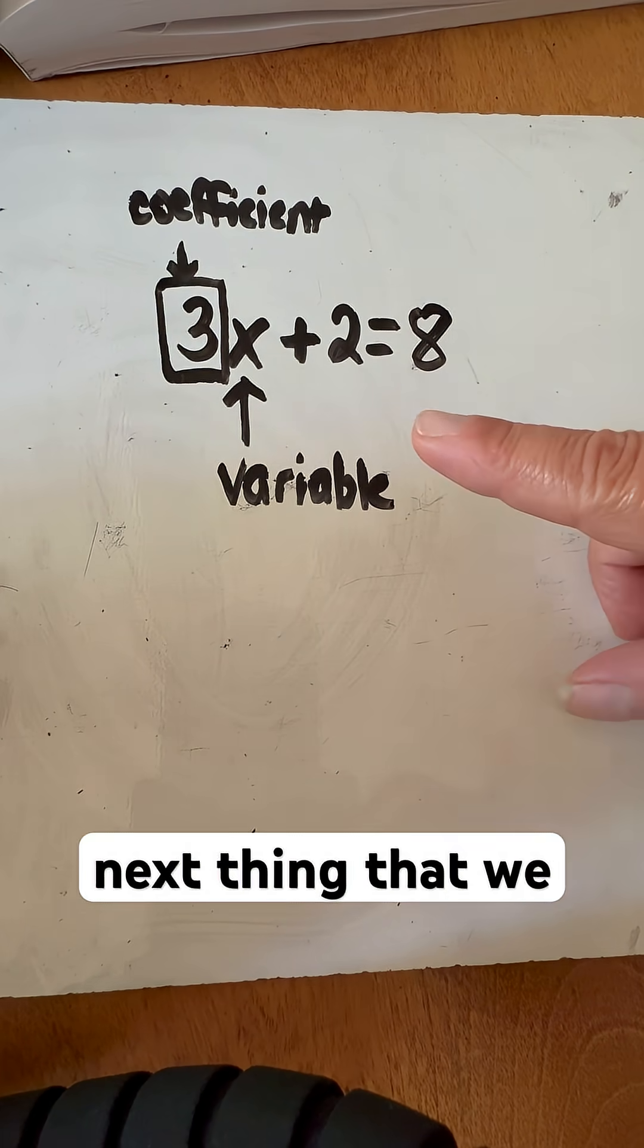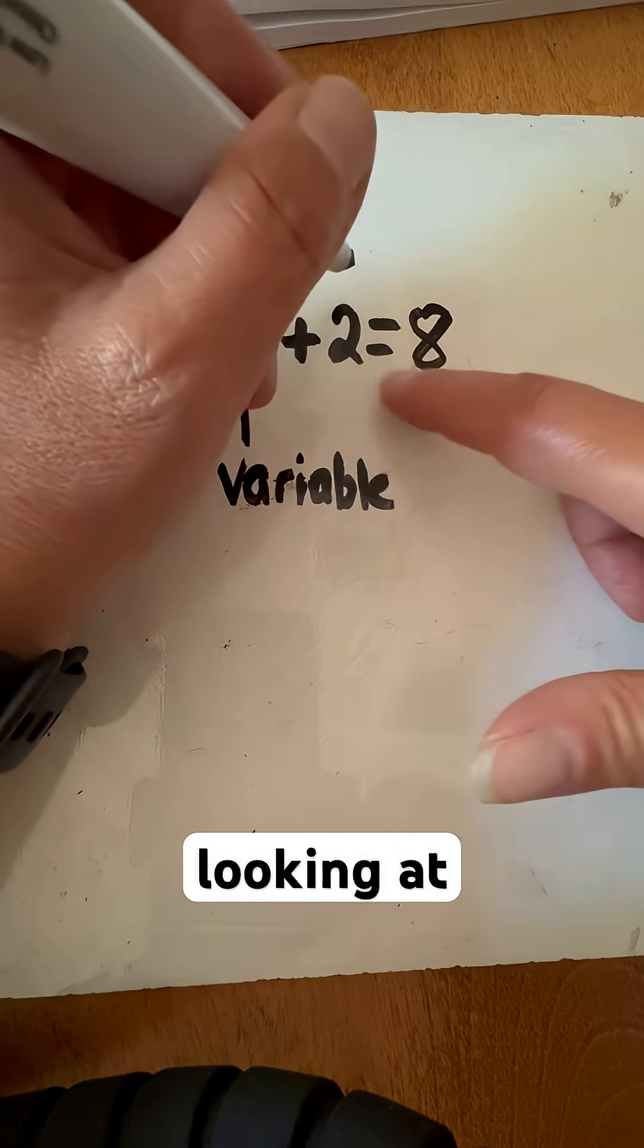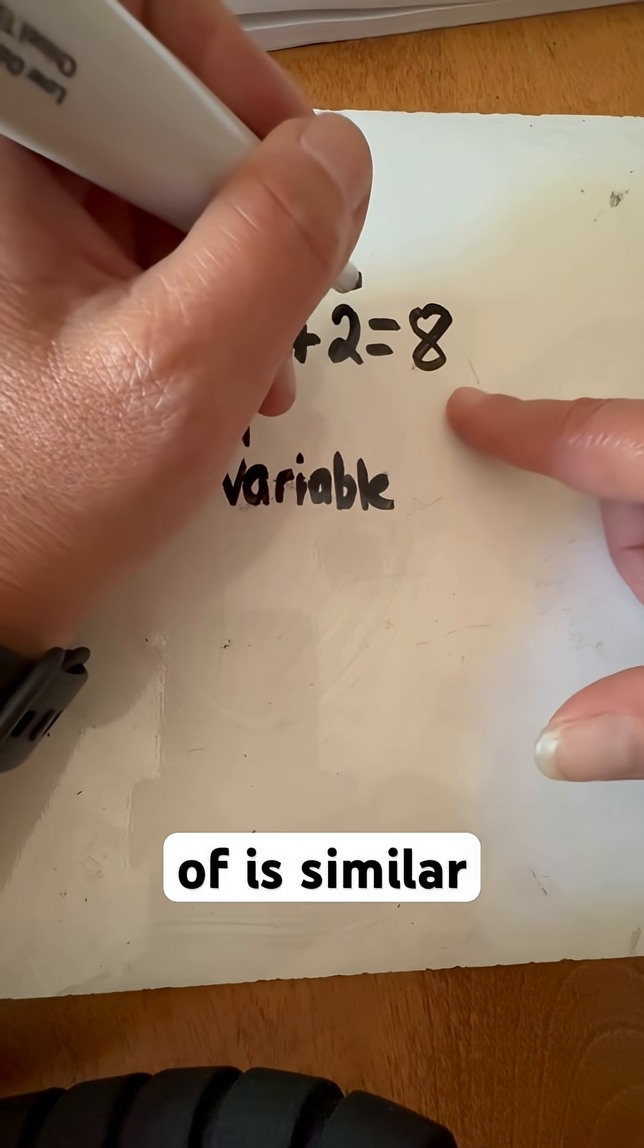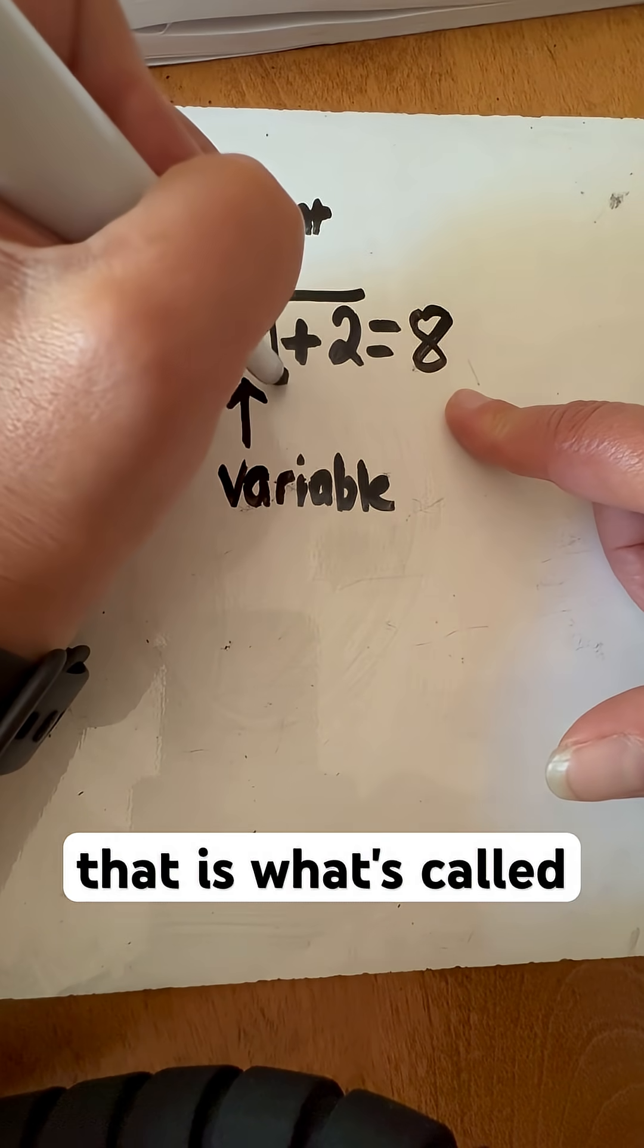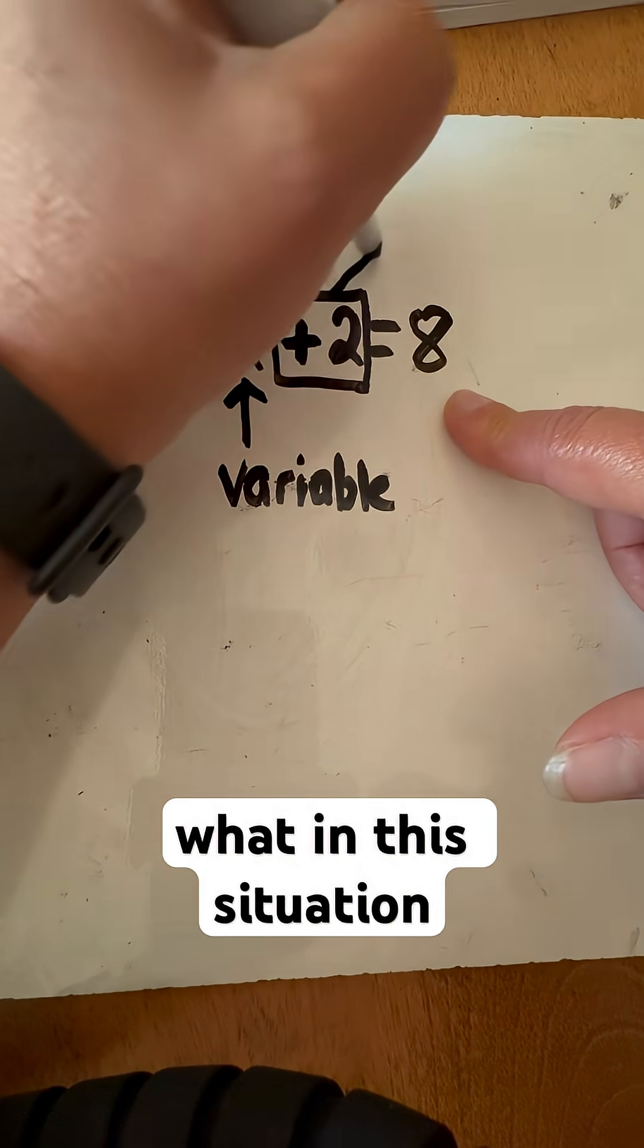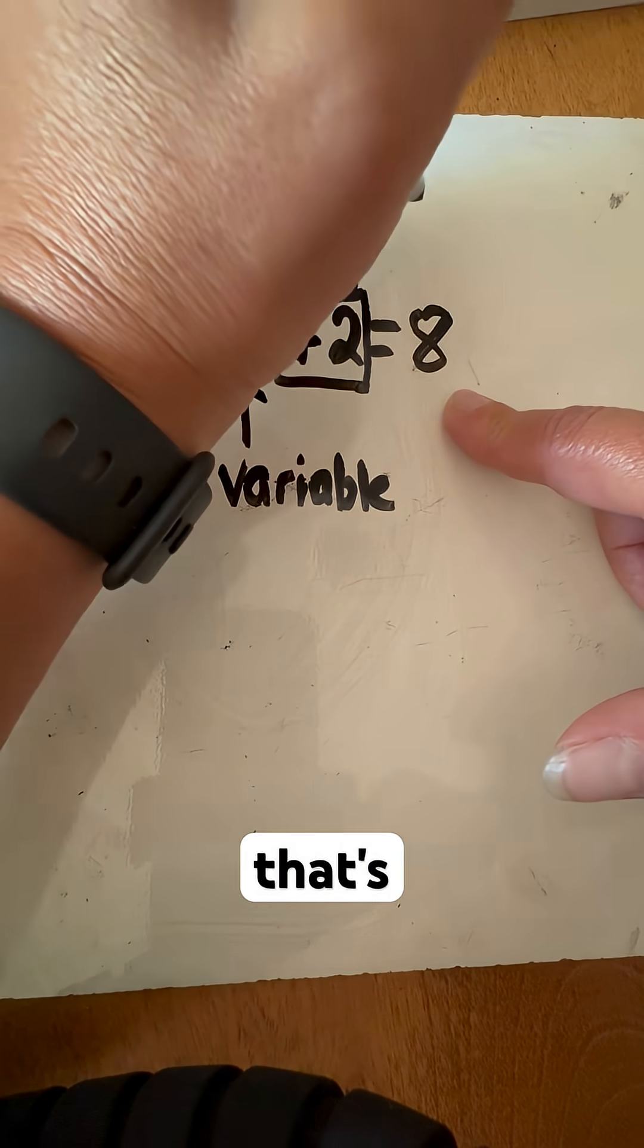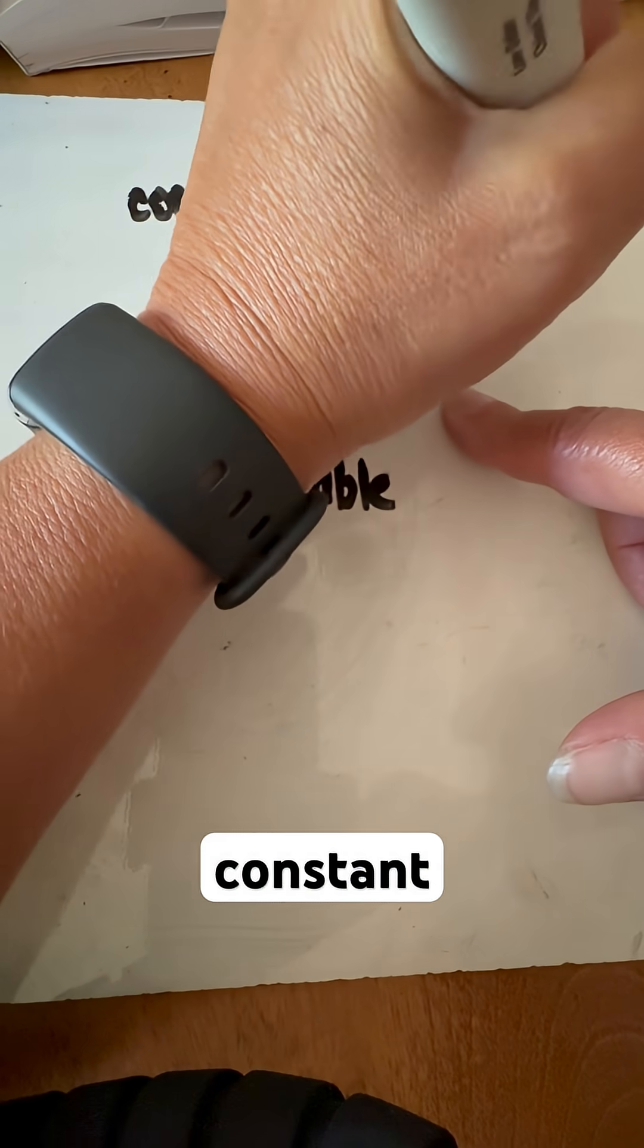Now, the next thing that I have here is that this two, this is something that we're looking at that kind of is similar to that eight. It doesn't have any variable next to it, but that is what's called a constant. So that means that no matter what in this situation is happening, that's always going to be there. This is what's called a constant. This is your vocabulary lesson for the day.